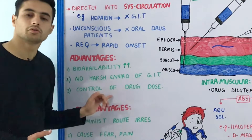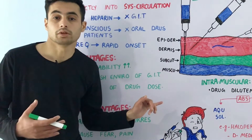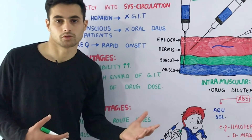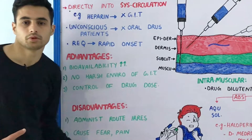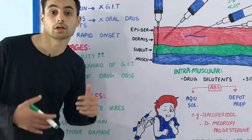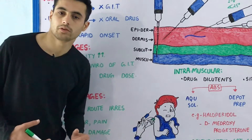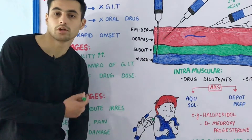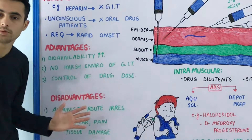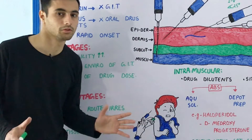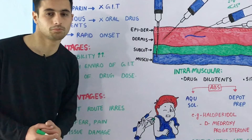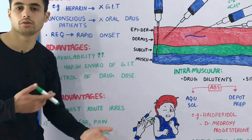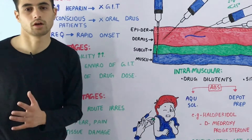We can also control the dosage of the drug according to the need of the patient — if the patient requires more dose, we can give a more concentrated drug. The major disadvantage of the parenteral route is that it causes pain, fear, tissue damage, and infections. For these reasons, the parenteral route is not ideal for children as it can be traumatizing. Also, the administration cannot be reversed — once you have injected the medication, you cannot take it out.